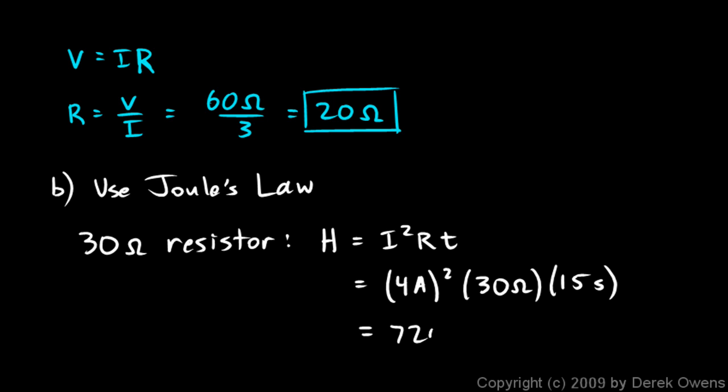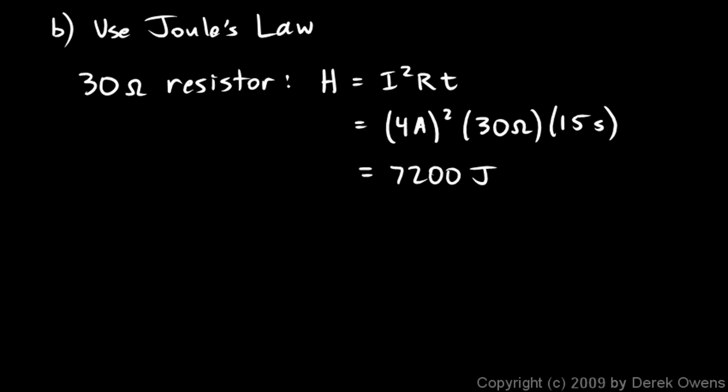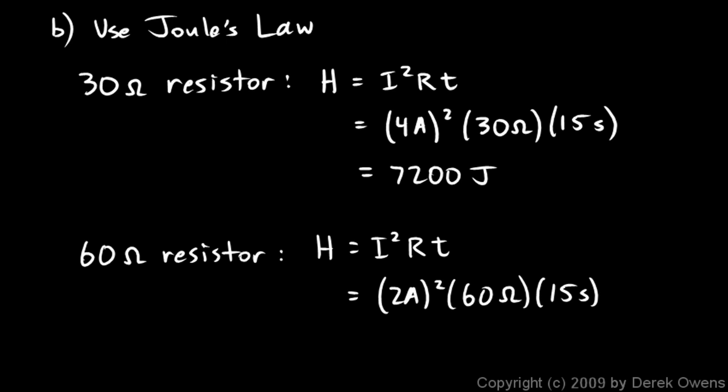If you multiply all those out we end up with joules, and that comes out to 7200 joules. And then for the 60 ohm resistor, again same equation H equals I squared RT. This one had 2 amps of current and 60 ohms of resistance and again the time is 15 seconds, and we multiply all that out and we get 3600 joules.